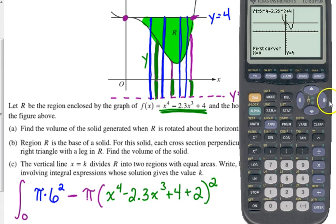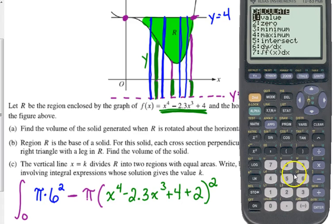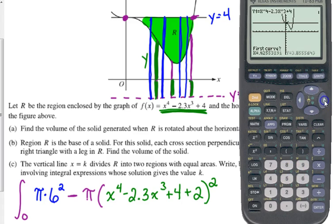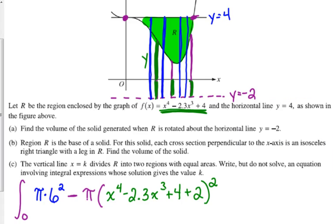Intersect. They intersect in two places. I do have to move it over some. This works when you have to find zeros. There we go. 2.3. They intersect at 2.3.